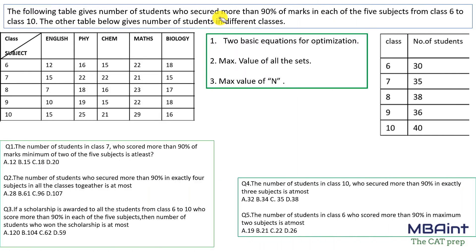Welcome! We'll look into a really good set of Venn diagram multiple-set optimization. As usual, if you have not attempted this set, do attempt it — the link of the question is in the description section — and then watch the video solution. The following table gives the number of students who secured more than 90 percent marks in each of the five subjects, from class 6 to class 10.